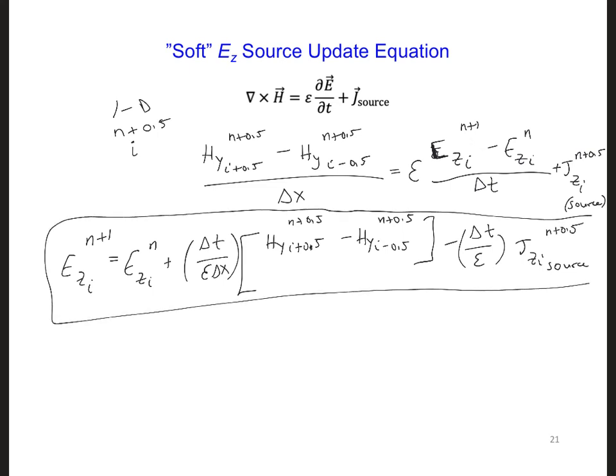This is the update equation we want to implement at the source. If we look at this equation, we can see that the first part is just a regular update. This is the same as our regular update—it's identical to the form of the update equation we have for EZ everywhere in the grid. So at the location of the source, the only new thing is that we need to subtract this extra term.